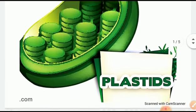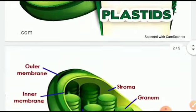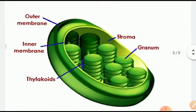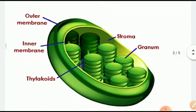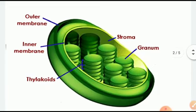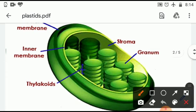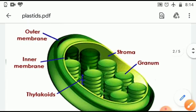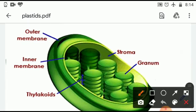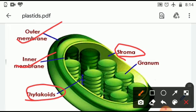Let us see the structure of the chloroplast. Chloroplasts can be seen as green in color. They have two membranes: the outer membrane and the inner membrane. Inside the inner membrane we have a space called stroma, and in the stroma we have thylakoids which are placed one over the other.